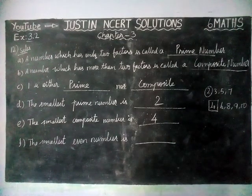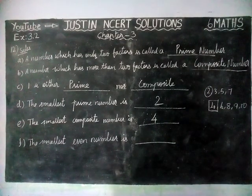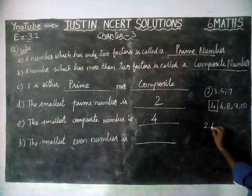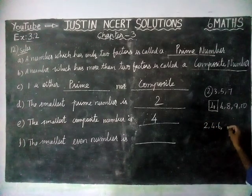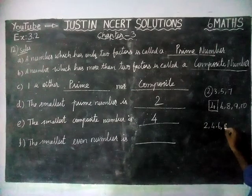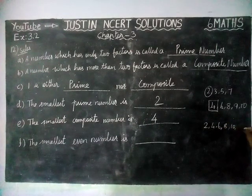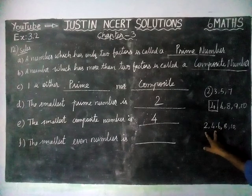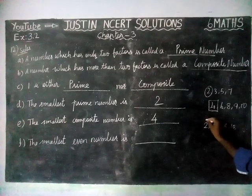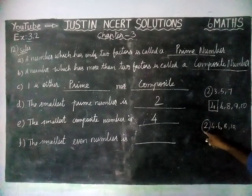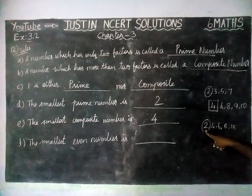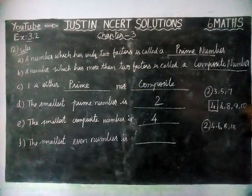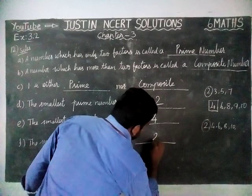And then the final question: the smallest even number. Writing even numbers: 2, 4, 6, 8, 10. A number which is divisible by 2 is called an even number, and the first number is 2, so the smallest even number is 2.